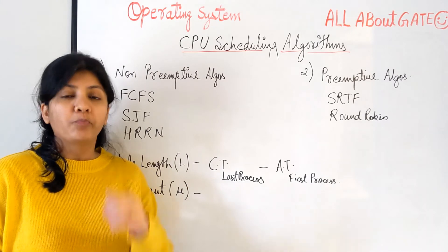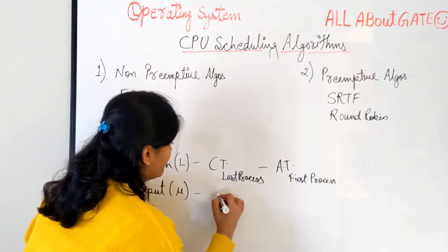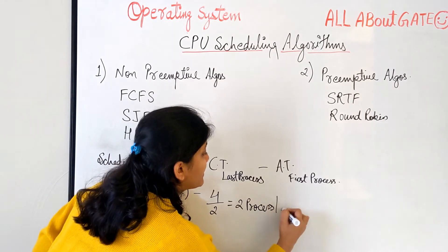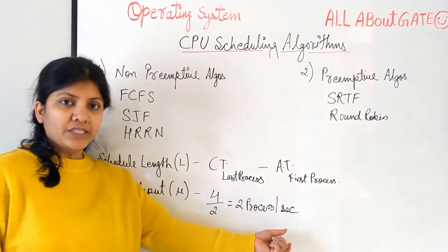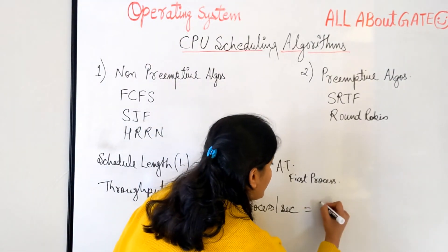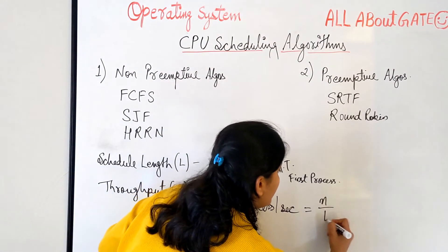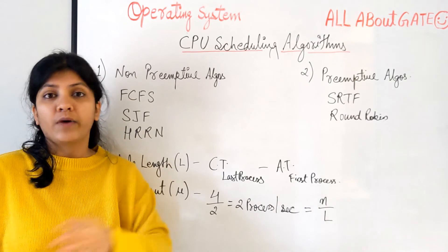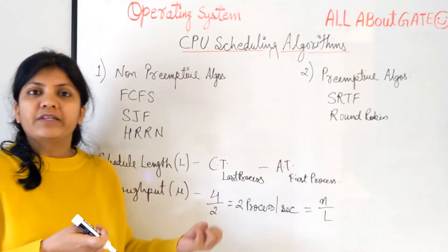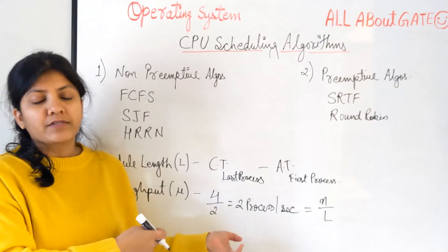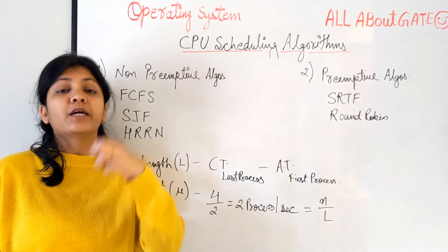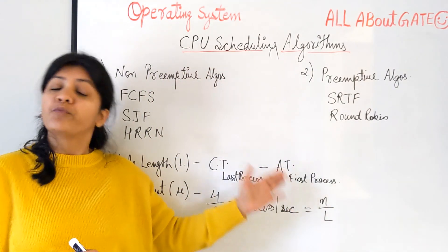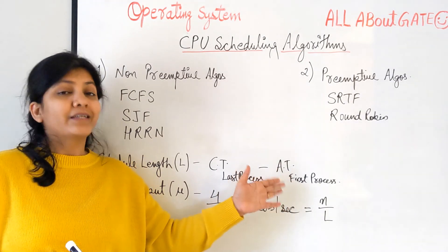Throughput is the total number of processes executed per unit of time. For example, if 4 processes complete in 2 seconds, the throughput is 2 processes per second. To generalize: if we have n total processes and a schedule length of L, throughput equals n divided by L. This concept applies in operating systems, databases, and computer organization — throughput always represents the amount of work done per unit time. We'll see you in the next video when we start the first CPU scheduling algorithm.